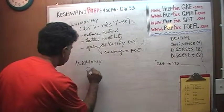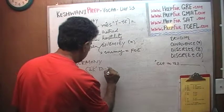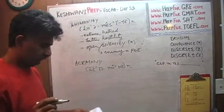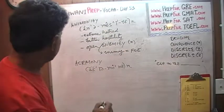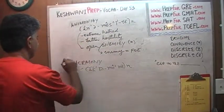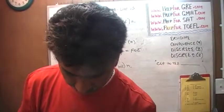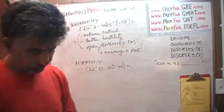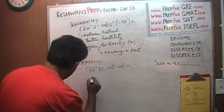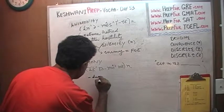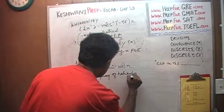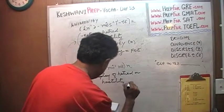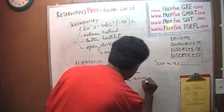The last word to learn today is acrimony. What is acrimony? Well, acrimony encompasses everything we've discussed, but it has a nuance of being expressed in speech or manners. An acrimony is a display of hatred, or hostility, or animosity.